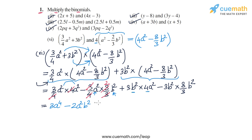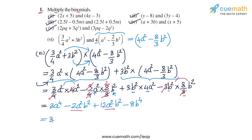And minus 3B squared into 8/3 B squared: the 3s cancel and B squared times B squared is B to the power 4, giving minus 8B to the power 4. Now the second and third terms are like terms: minus 2A squared B squared plus 12A squared B squared gives 10A squared B squared. So the final simplified expression is 3A to the power 4 plus 10A squared B squared minus 8B to the power 4.